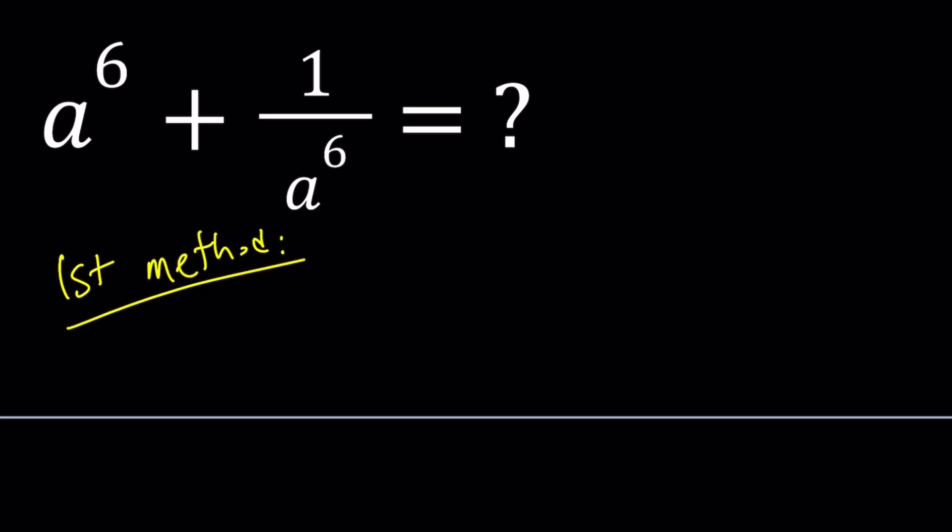So for my first method, I'm going to start with this equation and solve it. This is a quadratic and can be easily solved. If you use the quadratic formula, you're going to get a equals 3 plus or minus the square root of 5, divided by 2. So there are two roots, and notice that their product is 1. That's a fact we're going to use in a little bit.